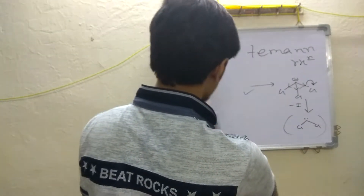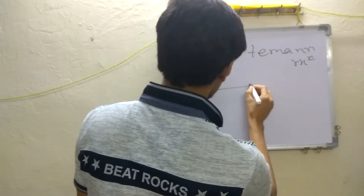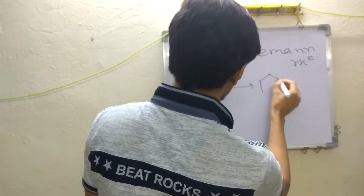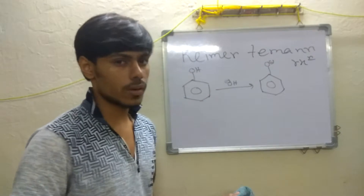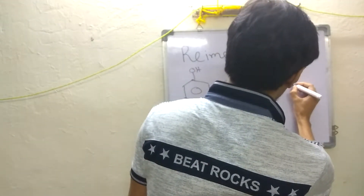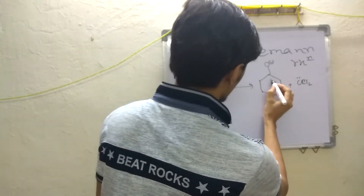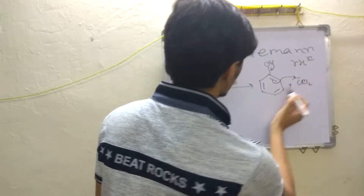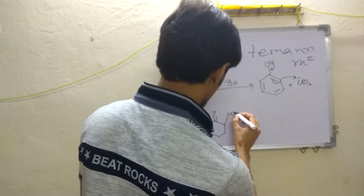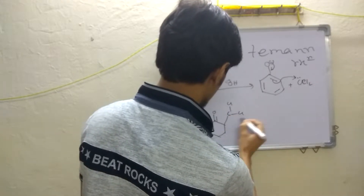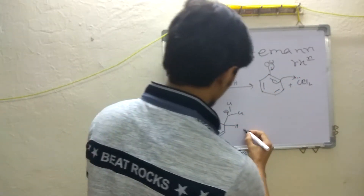Phenol is also present, and you may know that phenol is acidic enough to be deprotonated by NaOH to give the phenoxide anion. So in your reaction medium you have the phenoxide anion and the dichlorocarbene already formed. The phenoxide anion can then attack on the dichlorocarbene to give an intermediate.